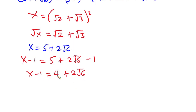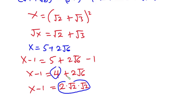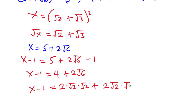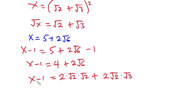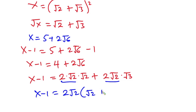Since we're not using any calculator, let's simplify. We have x minus 1 = 4 + 2√2·√3. Note that 4 = 2·√2·√2, so x minus 1 = 2√2·√2 + 2√2·√3. We can factor out 2√2, giving x minus 1 = 2√2(√2 + √3).